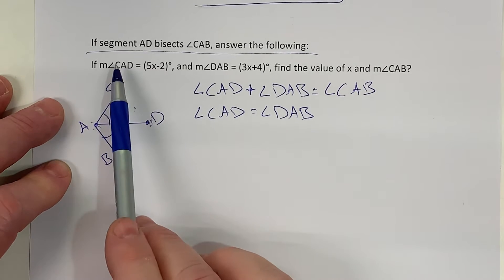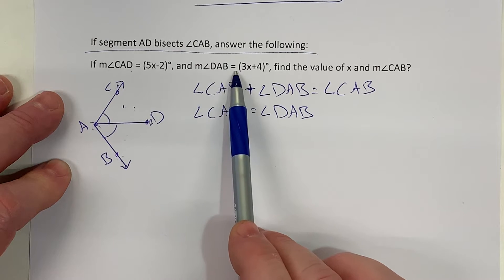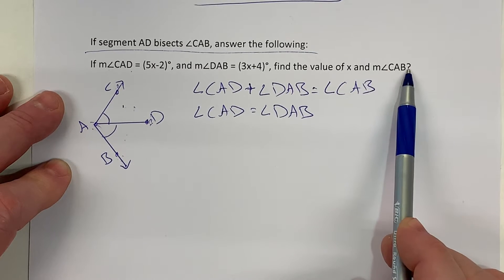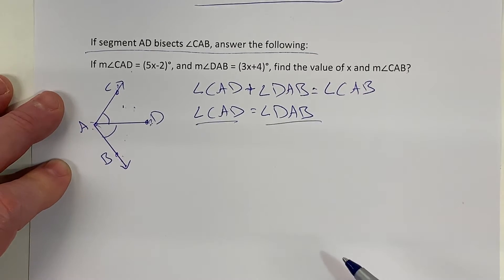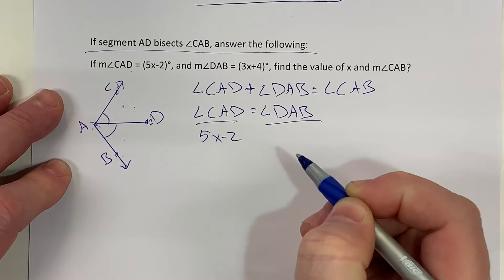Now I look at what I was given. It told me that CAD equals 5x - 2 and DAB is 3x + 4. Find the value of x and the measure of angle CAB. So it gave me the value of CAD and DAB, so I'll plug those in. 5x - 2 equals 3x + 4.